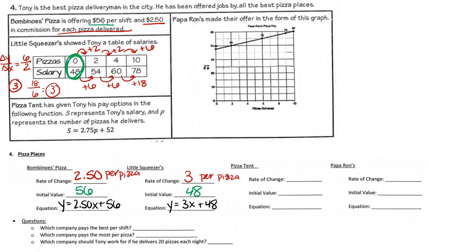For Pizza Tent, the pay option is given in a function where S represents Tony's salary and P represents the number of pizzas delivered. Comparing to y equals mx plus b, the m and x values go together — that's 2.75, so he gets $2.75 per pizza. The initial value is 52, meaning he gets $52 for coming into work. Then he can make $2.75 extra per pizza he sells.